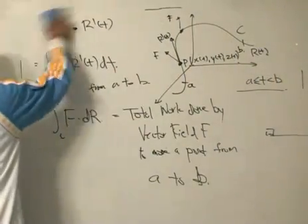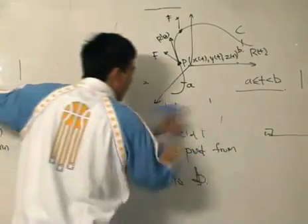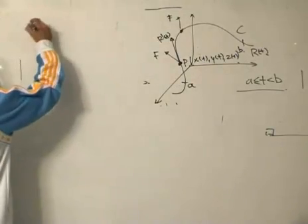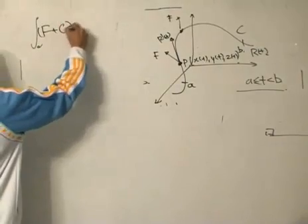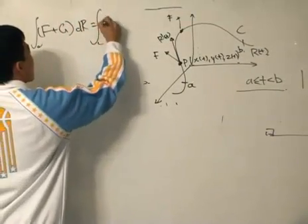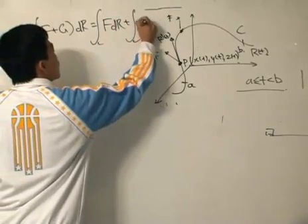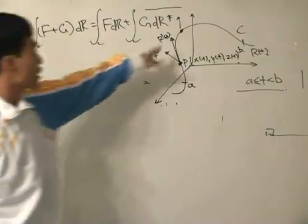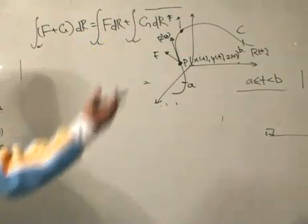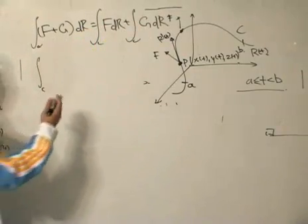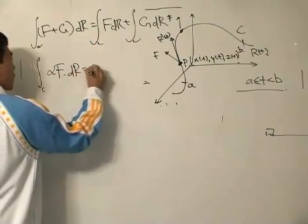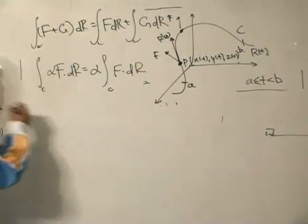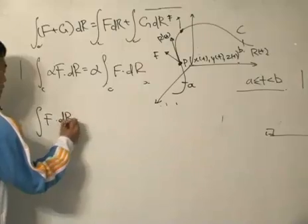Now that you understand what the line integral represents, here are some properties without proof as they are self-explanatory. First, the line integral of two vector fields F plus G over curve C equals the individual line integrals: the integral of F·dR plus the integral of G·dR. You can split them up — you're just summing the individual forces. Second, a scalar multiple alpha can be factored out of the line integral.